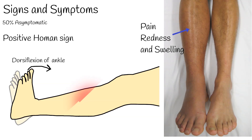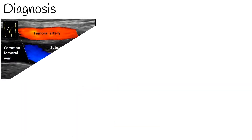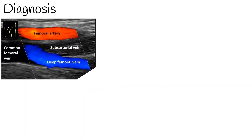The sign is elicited when the examiner performs dorsiflexion of the patient's ankle. Sometimes pain is not present, but patient resistance against dorsiflexion can also be considered a positive Homan's Sign. The diagnosis can be established with Doppler duplex ultrasound.